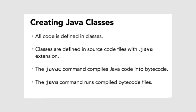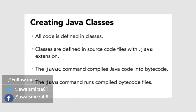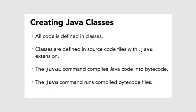All Java code is defined in classes. Each source code file defines at least one Java class that has the file extension .java. You can create these text files in any text editor, although I will be using IntelliJ IDEA for most of this course. The compiler javac compiles your text-based code into bytecode that can be interpreted by the JVM, and then the java command runs that code.